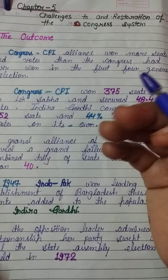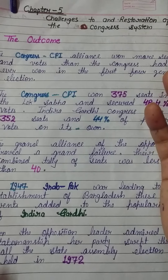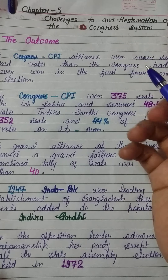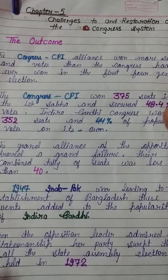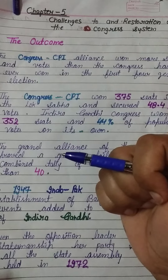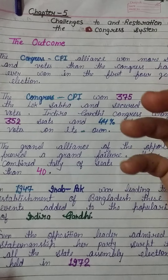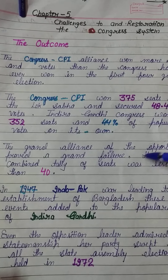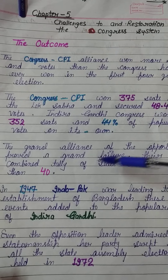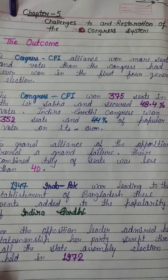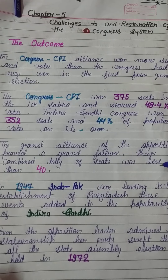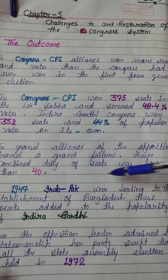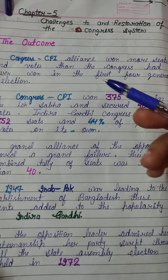In the first four elections, Congress's vote share increased. The grand alliance of the opposition proved a grand failure, and their combined tally of seats was less than 40.